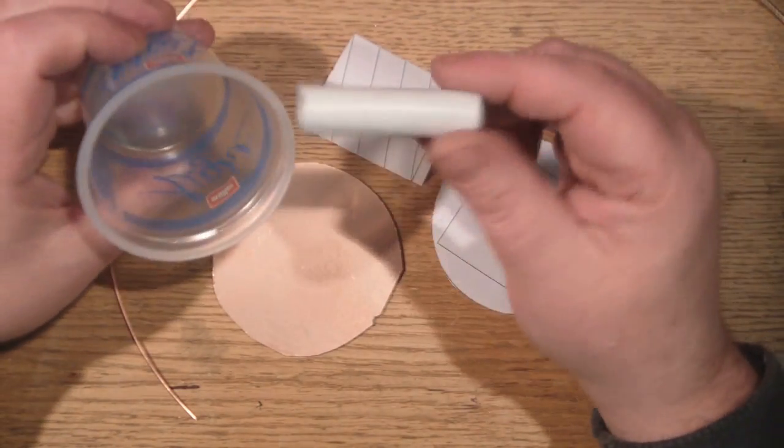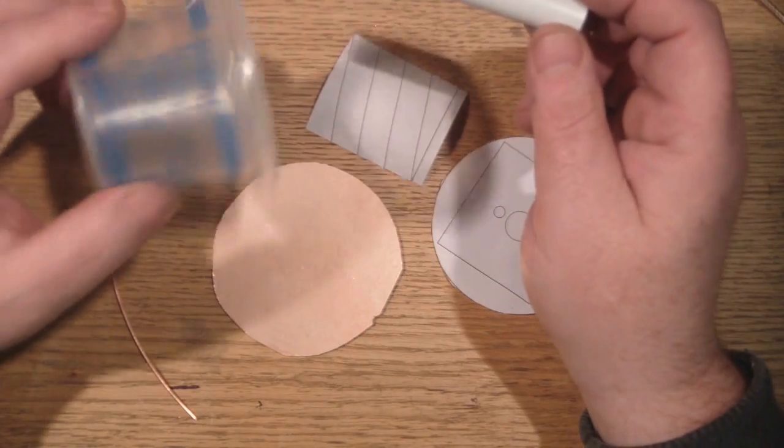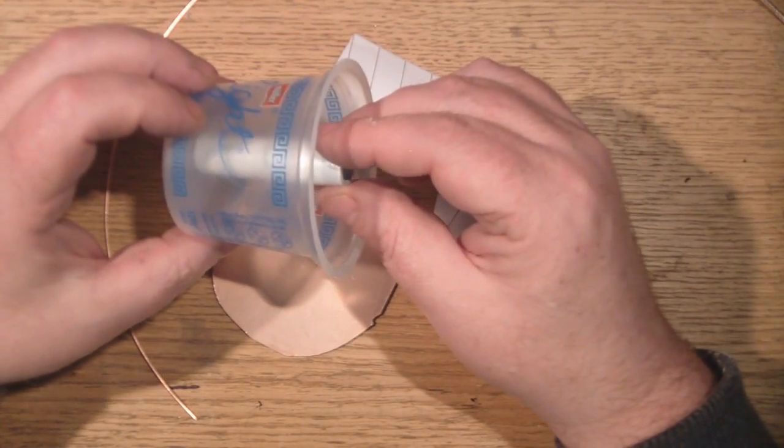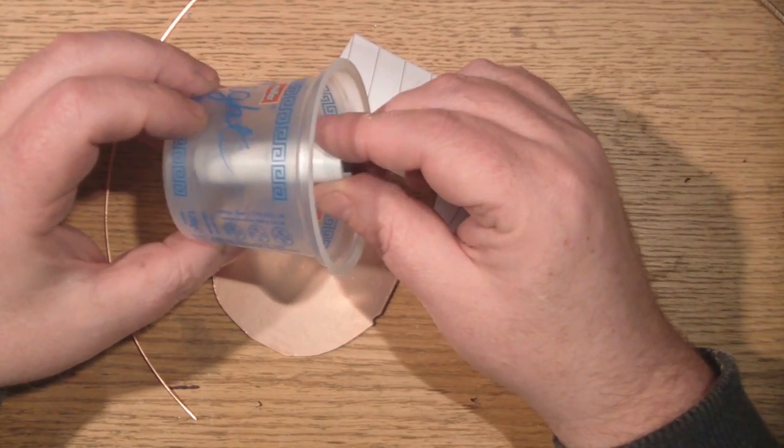Just have a look around different yogurt pots and you'll find one that will fit and you can use as a cover to protect your helical antenna.